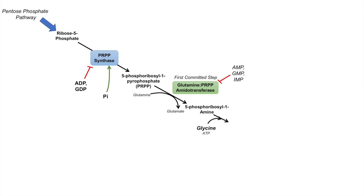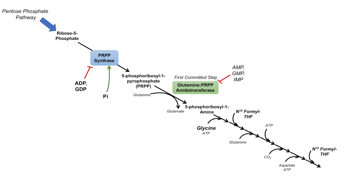The next several steps I'm going to quickly go through. There are actually 14 steps in the purine synthesis pathway, but all I want you guys to know is what is required. After 5-phosphoribosyl-1-amine, you require glycine and ATP. The next step requires tetrahydrofolate, then glutamine, then ATP, then CO2, then aspartate and ATP again, then tetrahydrofolate derivative again — all leading to a dehydration reaction and the production of inosine 5'-monophosphate, or IMP.